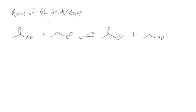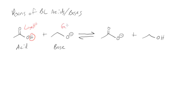If I look at a reaction of a Bronsted-Lowry acid and base — I have some kind of an acid and some kind of a base — they're going to react. The acid wants to give up its proton and the base wants to gain a proton. So the acid is going to lose H+, and the base is going to gain H+.